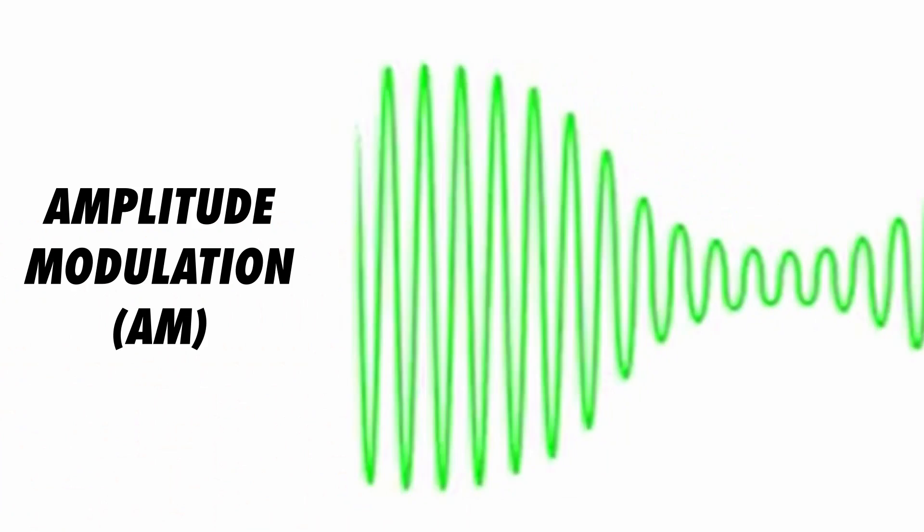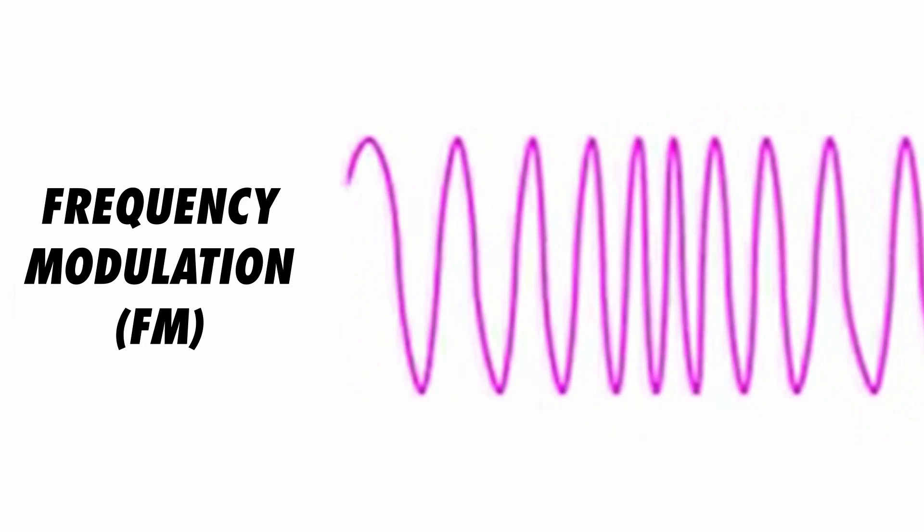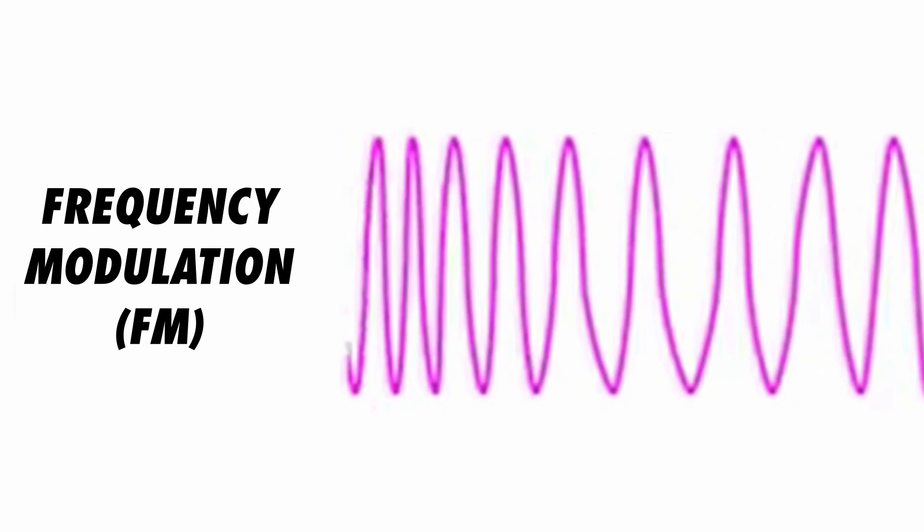We've been saying modulation and demodulation. When I heard of AM, amplitude modulation, FM, frequency modulation, I understood that's how radio works, but I didn't understand how those things actually work. Can you help me understand what modulation actually is?